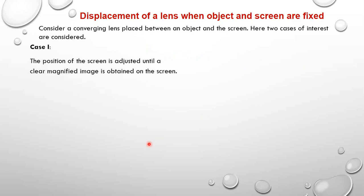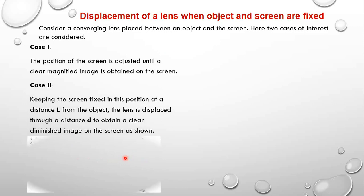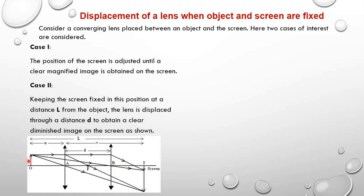In the second case, we keep the screen and the object fixed, and then we displace the lens to a new position B, so that still a final image is obtained on the screen. We place the lens in front of the object, adjust the screen until the final magnified image is formed, then keep the screen and object positions fixed and displace the lens to position B.